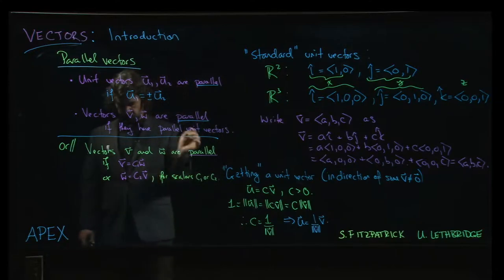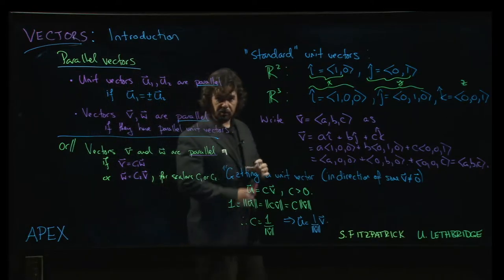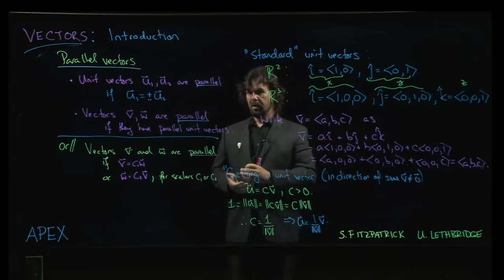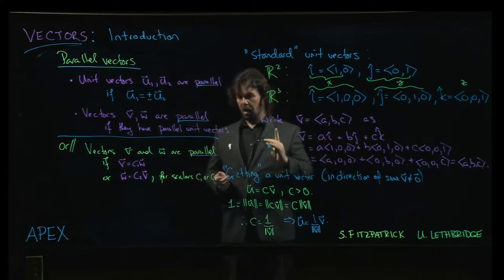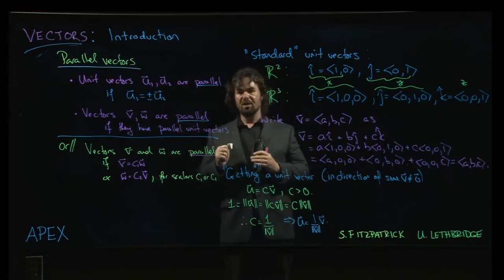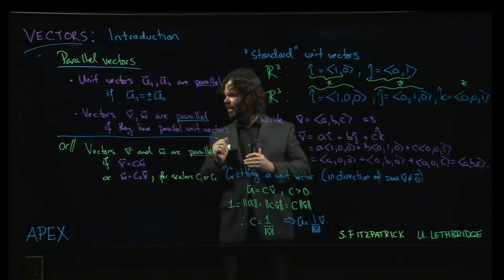And now, of course, as long as that scalar is non-zero, then c2 would just be the reciprocal of c1. But it is possible that one of those scalars could actually be zero, and we just have one of the two equations. In other words, because you could include the zero vector in this definition.